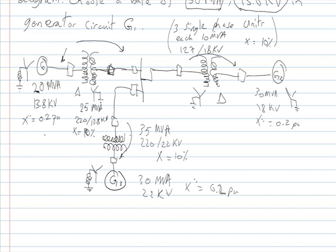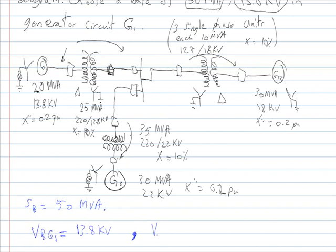Each component has its nameplate data: generator one has 20 MVA, 13.8 kV, and a per-unit reactance of 0.2. The rest of the system is shown in the figure. The solution begins with the base MVA — the apparent power — set at 50 MVA, and the base voltage on generator number one is 13.8 kV.